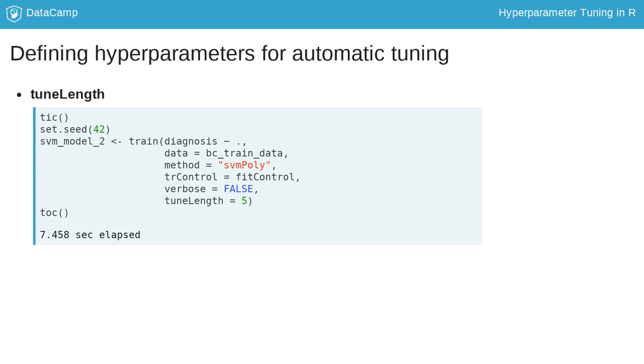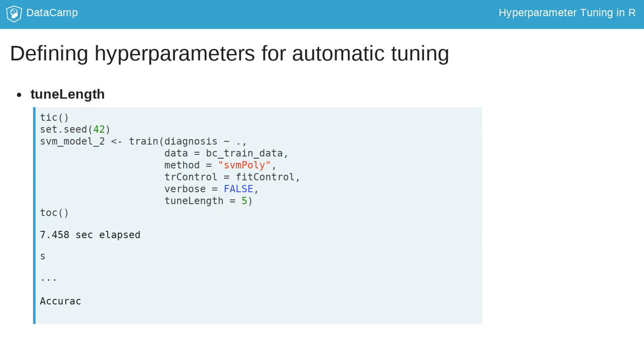Scale being 1 to the power of minus 3, 1 to the power of minus 2, 1 to the power of minus 1, 1 and 10. And c being 0.25, 0.5, 1, 2 or 4. The best model now has degree, scale and c of 1.